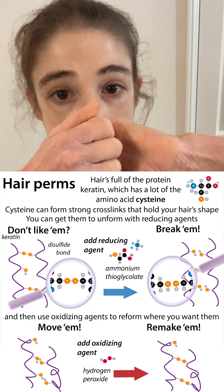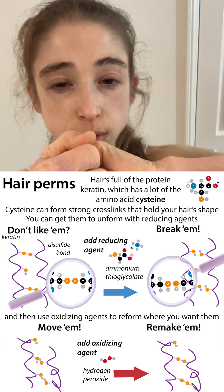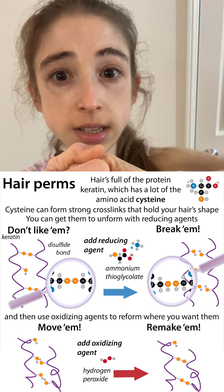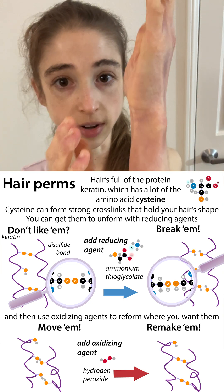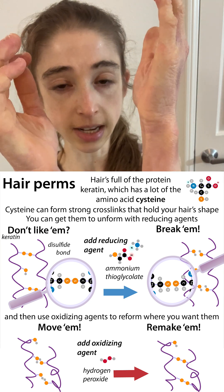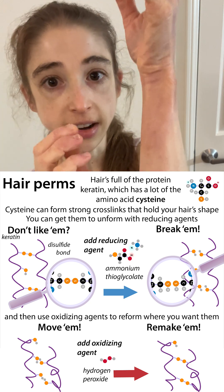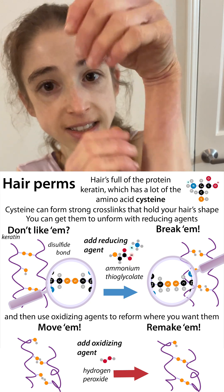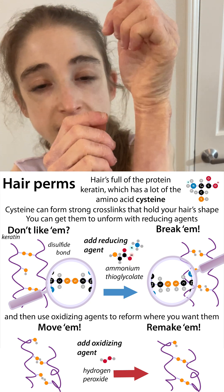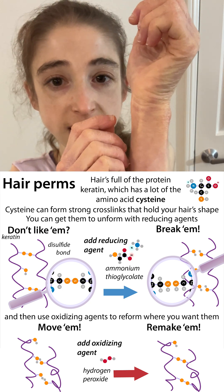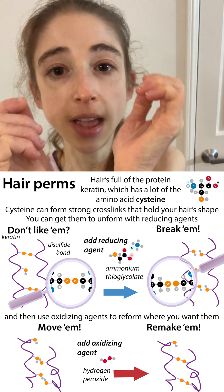So we've got these covalent crosslinks, these disulfide bonds, forming between these two strands of keratin. And say the strands of keratin are like this — so now the hair is kind of curled. But if they were like that, then it would be straight.